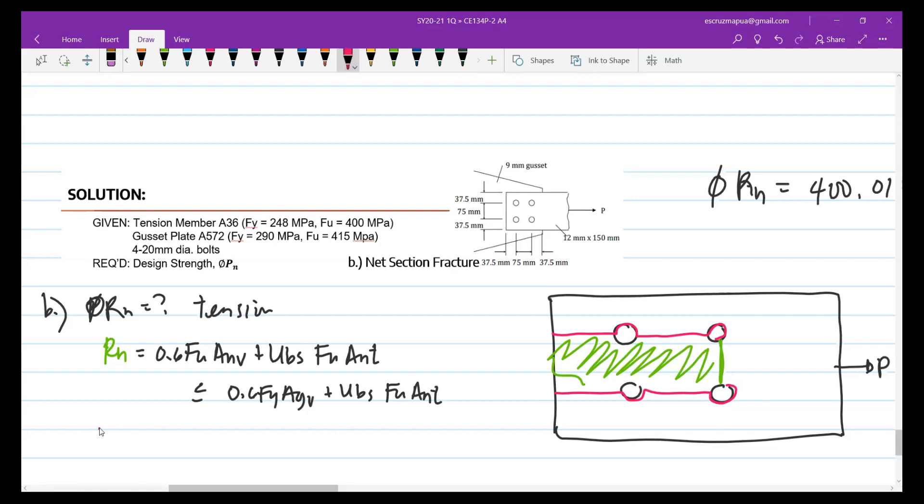Rn equals 0.6 FU ANV plus UBS FU ANT, should be less than or equal to the maximum 0.6 FY AG shear plus UBS FU ANT. Let's take them one by one, solve first for AG, AGV. What's AGV? The dimension here, center to center, is 37.5 and 75. So their total is 112.5. So 112.5, we won't subtract holes because it's gross. Times the thickness of the tension member which is 12, times 12. To make it area, times 2 because there are two shear planes, one on top, one on bottom. So that's the AGV times 24, so that's 2700 square millimeters.